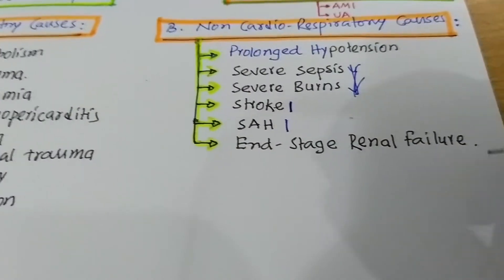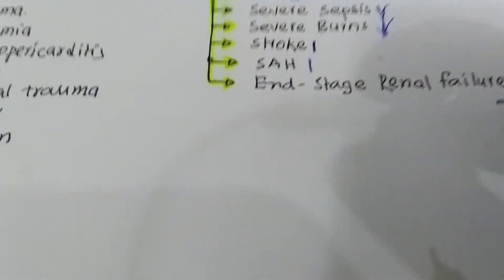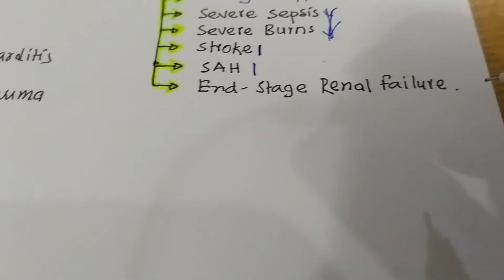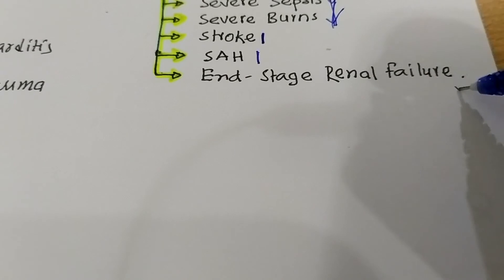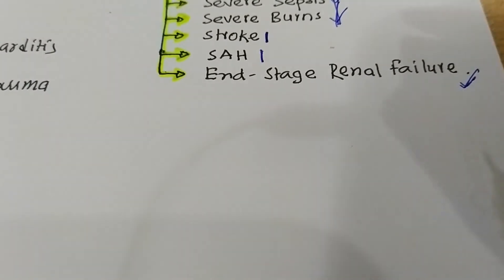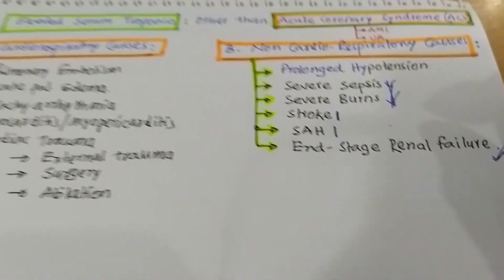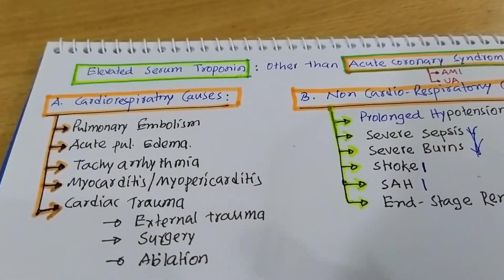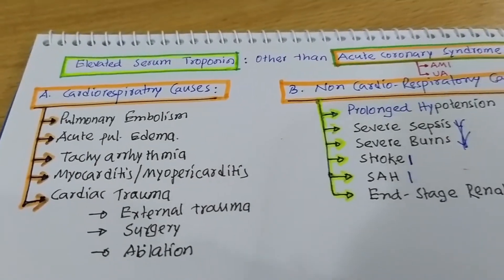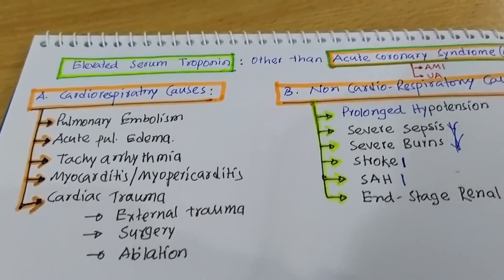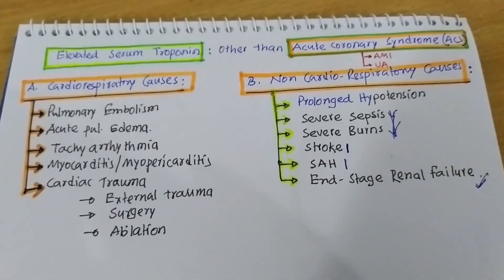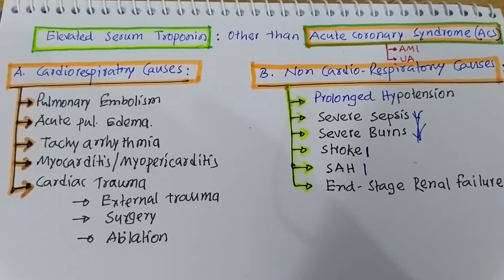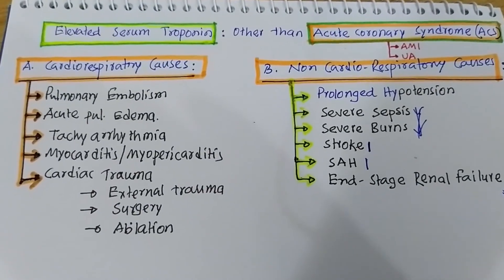Finally, renal disease or renal failure may increase serum troponin level a little bit. So this is all about the elevated serum troponin level other than acute coronary syndrome. Thank you very much.